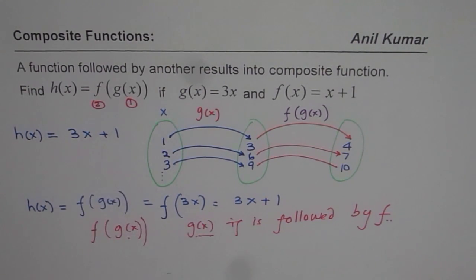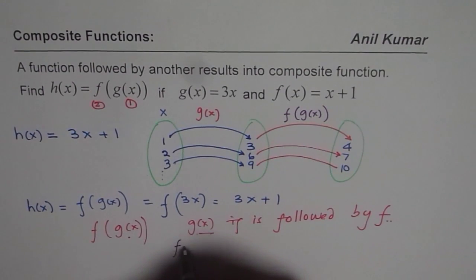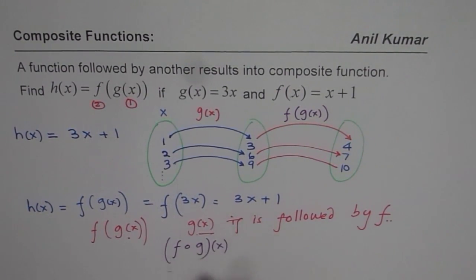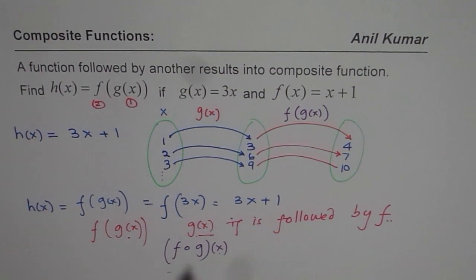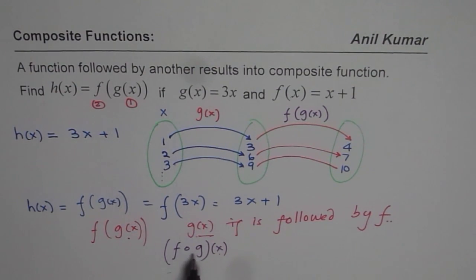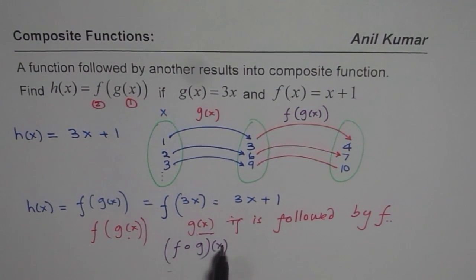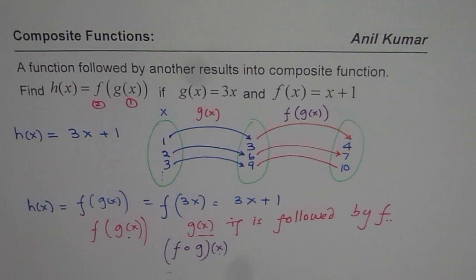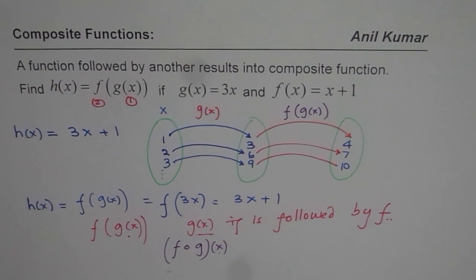At times we also write this in the form of f of g. These are the operations being performed on the independent variable x. That's an alternate way of writing the same composite function. First operation is g(x) followed by f(g(x)). I hope with that things are clear and we will now take up some more examples which will help you to understand this concept of composite functions. Thank you.